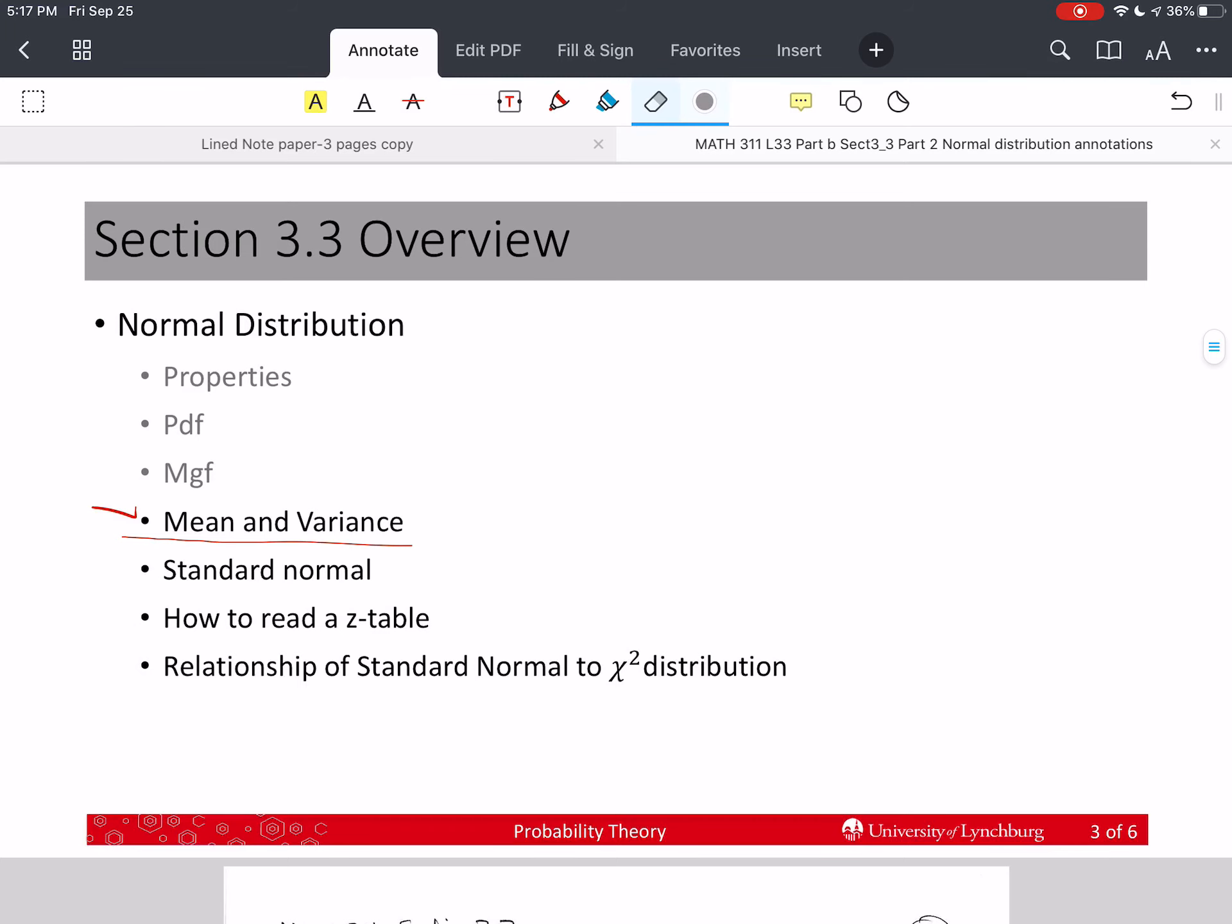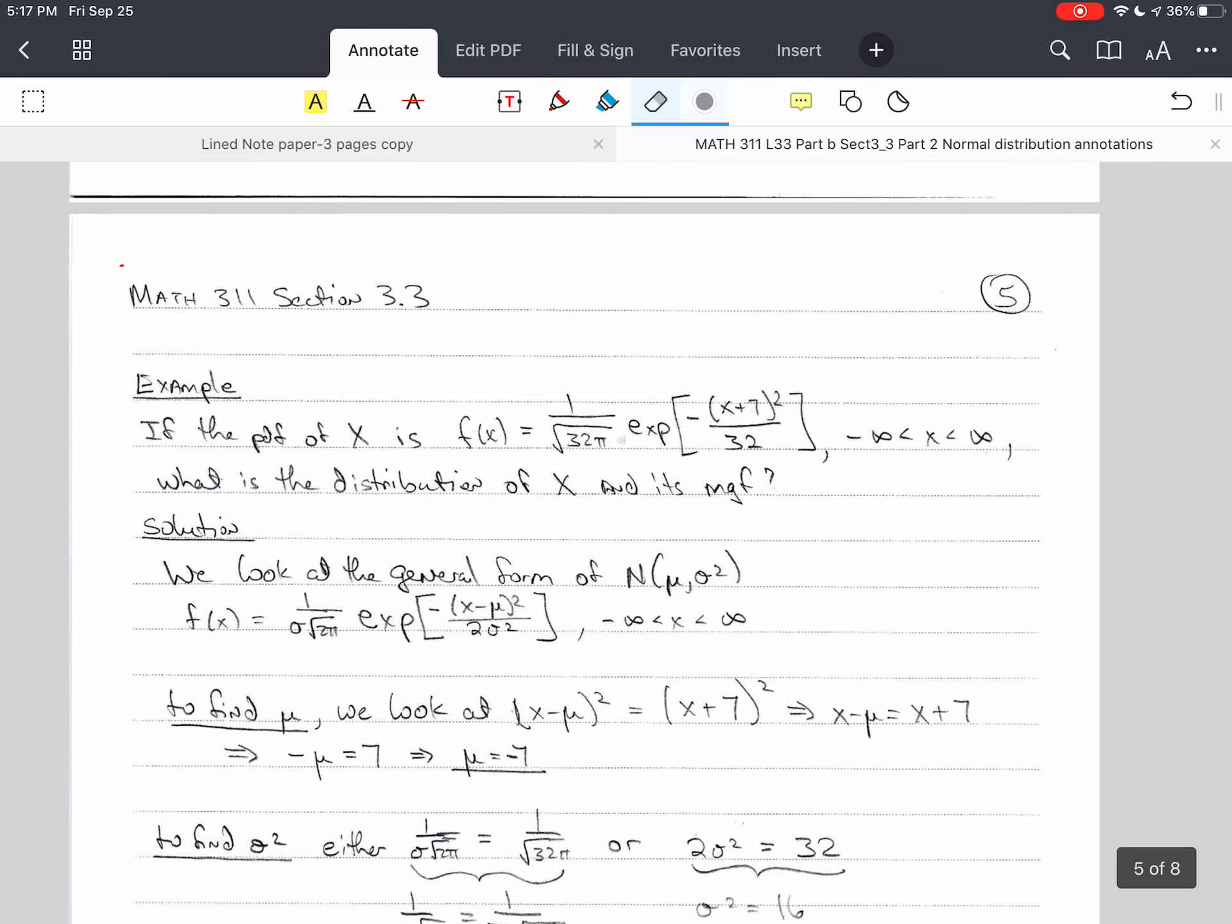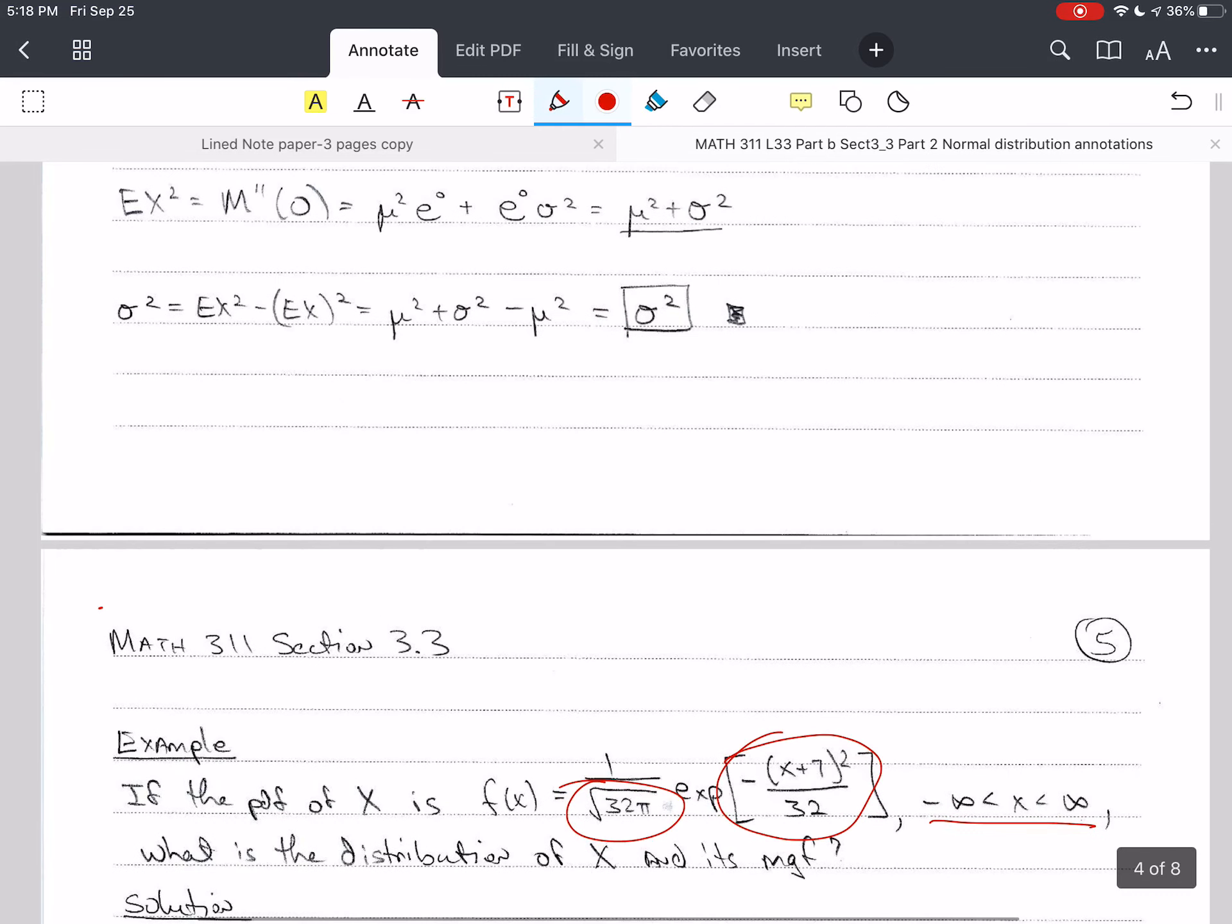So we're going to continue on, and we're going to work an example to start with. If the PDF of x is given here as f(x) equals 1 over square root of 32 pi, and then we have the exponent here, we want to know what's the distribution of x and what is its mgf, moment generating function.